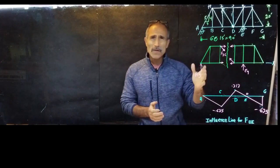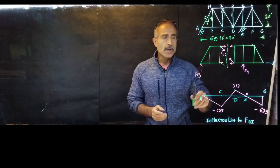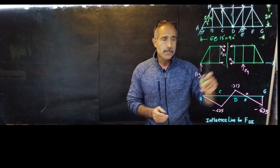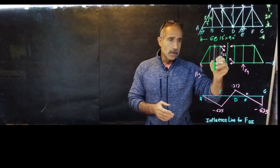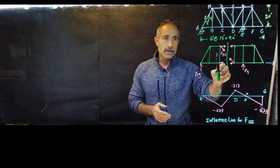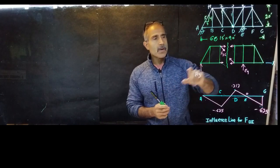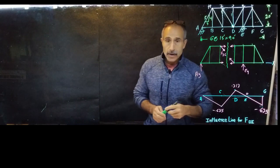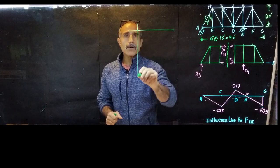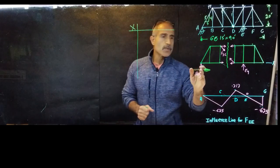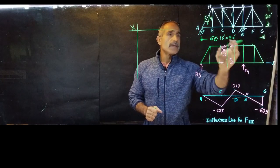One of the first things we want to do is calculate the reaction. When we do an influence line we're going to use a unit load — meaning we put one unit load here first, calculate the reaction, then move the unit load to the next position and calculate the reaction again. We continue doing this and record all the reactions. Let's make a chart for ourselves where x goes from zero all the way to 90 feet.